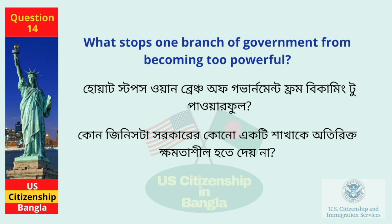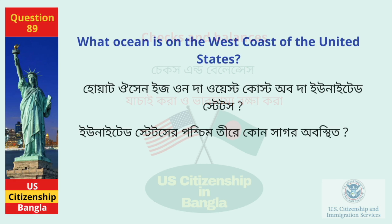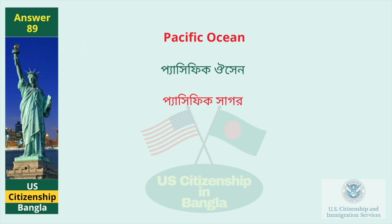What stops one branch of government from becoming too powerful? Checks and balances. What ocean is on the west coast of the United States? The Pacific Ocean.